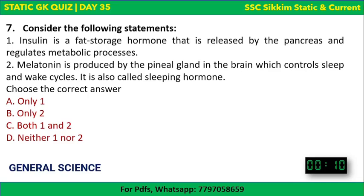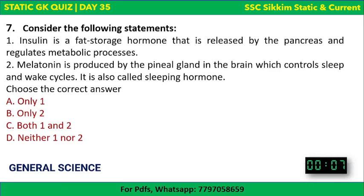Consider two statements: Statement 1 — insulin is a fat storage hormone released by the pancreas that regulates metabolic processes. Statement 2 — melatonin is produced by the pineal gland in the brain, controls sleep and wake cycles, and is known as the sleeping hormone. Both statements are correct. Melatonin is also sometimes known as the darkness hormone.